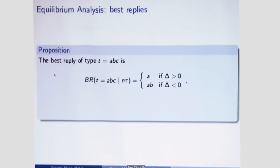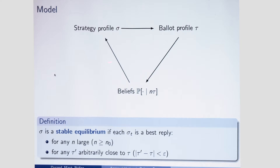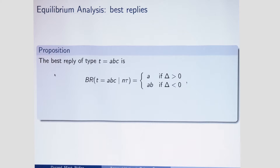I will first analyze the best reply arrow, then the beliefs arrow. On the best replies, there is a formal result corresponding to the previous intuition: the best reply of type ABC is either to vote for A or to vote for AB, and this depends on a parameter delta that depends on the probabilities of the pivot events. If the A-B pivot event is much more likely than the other, delta will be positive and the voter will vote for A. To determine the best reply, we need to compare the relative likelihood of the pivot events.